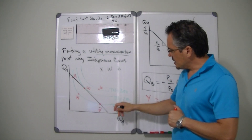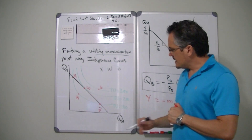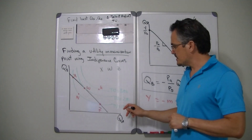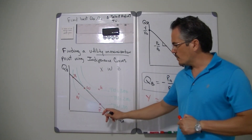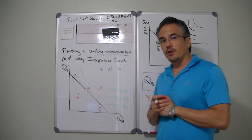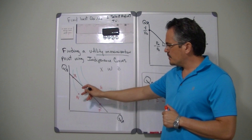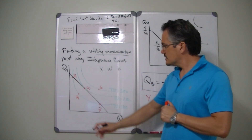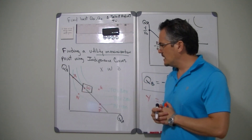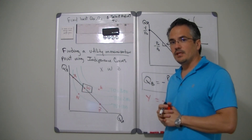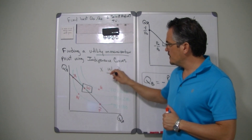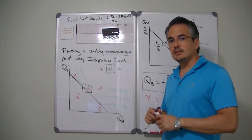Look at the indifference curves. If you select point Z, that will give you the same level of total utility — remember utility is the same as happiness — as point N and as point X. But we could do better. So if we pick point W, notice that we can have a higher total utility and still stay within our budget. The answer in this particular case is that point W is our utility maximizing point.